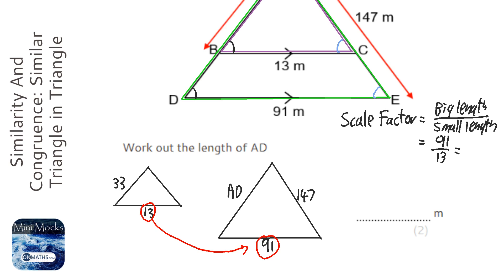I'll get my calculator out. 91 divided by 13 is going to be 7, there we go. So the scale factor is 7. So we times this by 7 to get here.